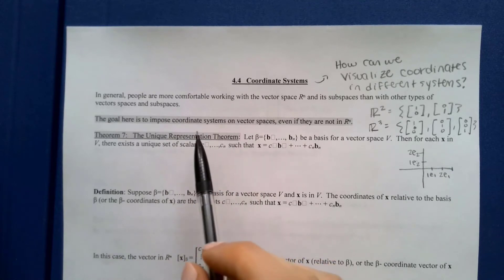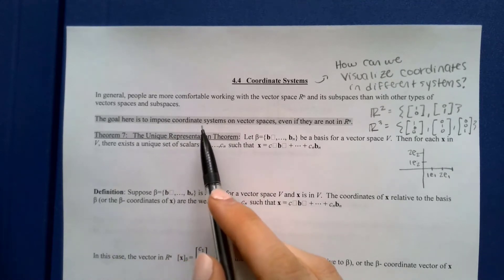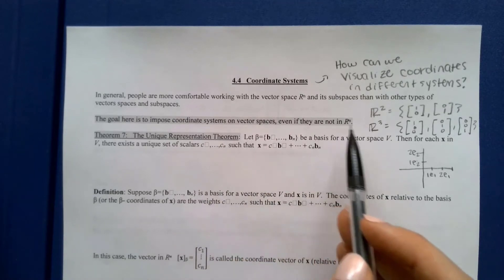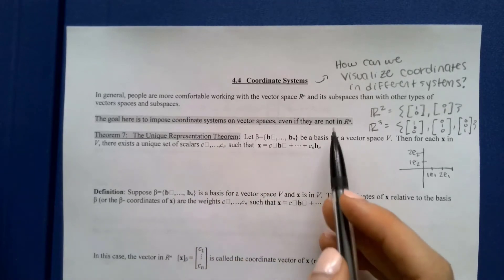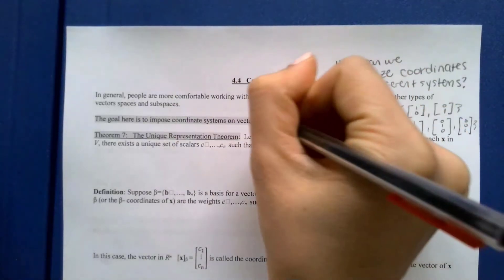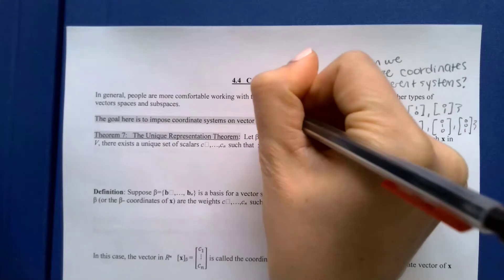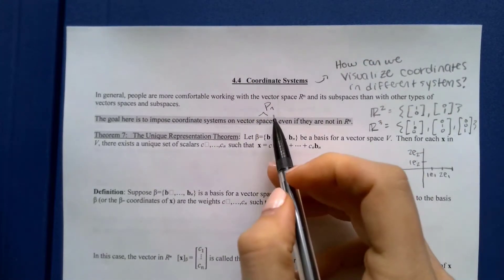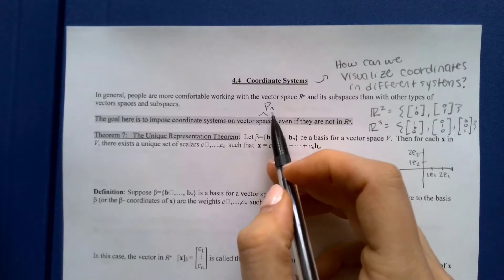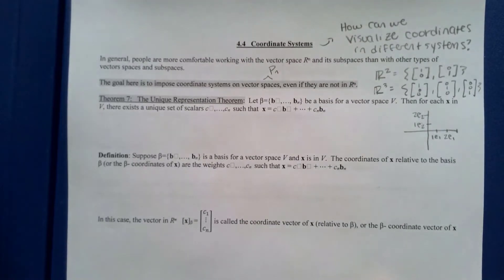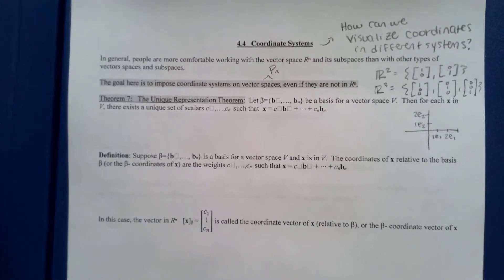Our goal here is to impose coordinate systems on vector spaces — meaning we'd like to use a geometric coordinate system on vector spaces even if they're not already geometric. We're really going to start thinking about the set of polynomials of at most degree n. There are a couple of things to go over before we start changing bases.